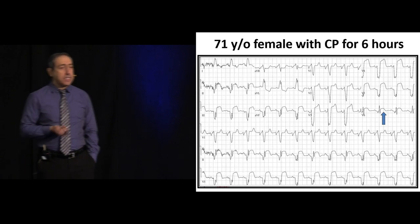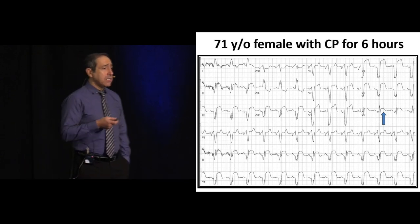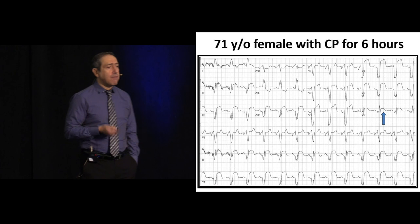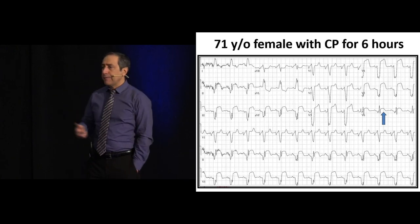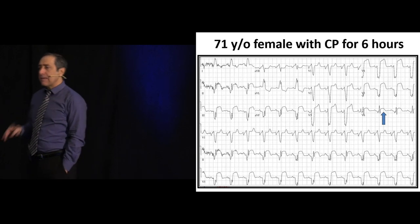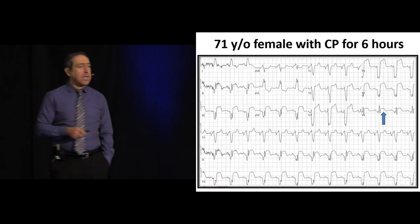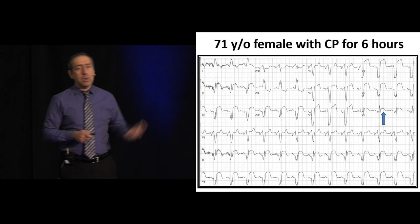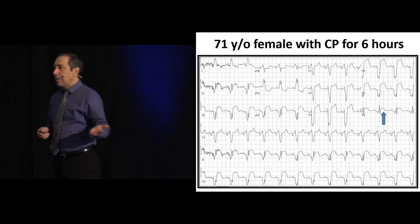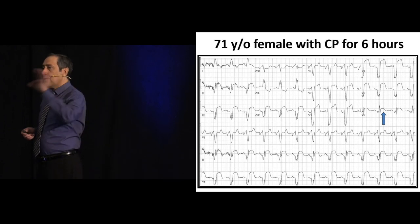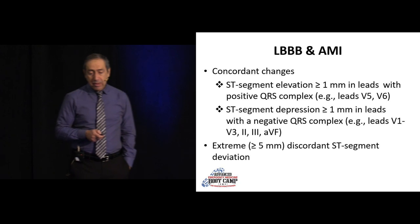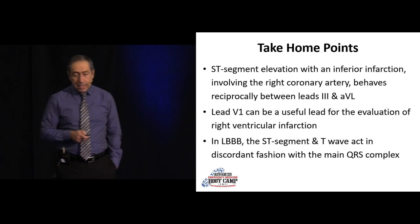You've now learned about very common things you'll see every shift: inferior MI and left bundle branch block. You're going to see left bundle branch block and left ventricular hypertrophy every day you work. You need to really understand the issue of discordance and the five millimeter rule. Understand inferior MI — you'll see it so many times in your career. When there's elevation in lead 3, look for AVL change, V1, and V2. Those are very important.